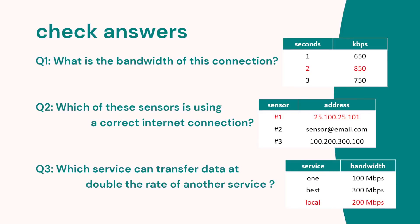Now let's check our answers to the questions we posed at the beginning of the video. What is the bandwidth for this connection? The bandwidth is the maximum bit rate, so 2 is the highest — the answer was 2. Which of these sensors is using a correct internet connection? The first one is a proper IP address. The second one is an email address. The third one has a number with 300 in it, which is above 255. So sensor 1 is the correct answer. Question 3: which service can transfer data at double the rate? They're all in megabits per second, and the local service is 200, which is double the 100 of the first service — so the answer is local.